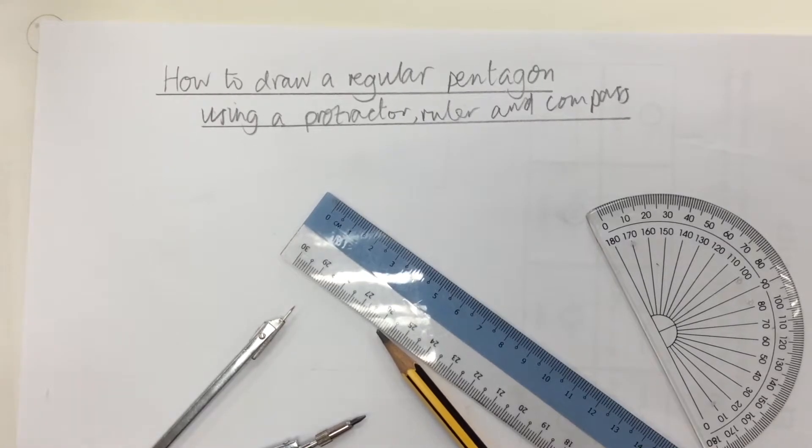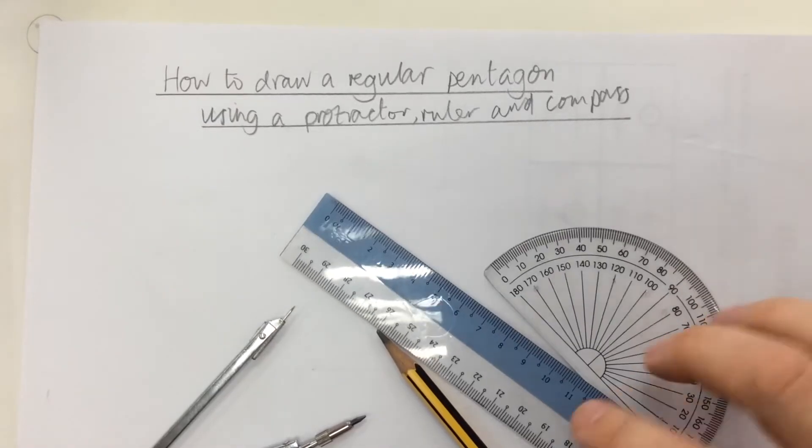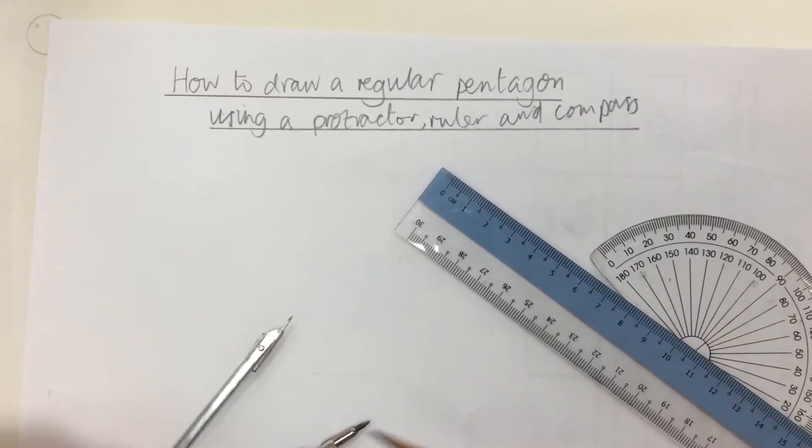In this video I'm going to show you how to draw a regular pentagon using a protractor, a ruler and a compass and a pencil.